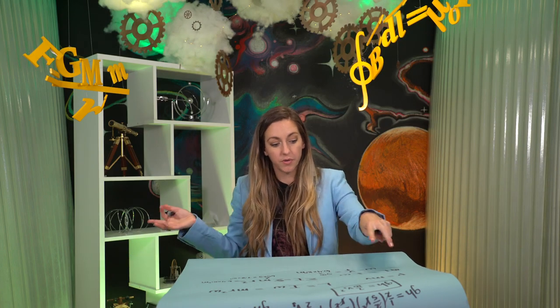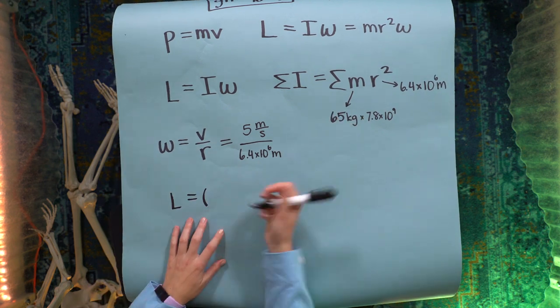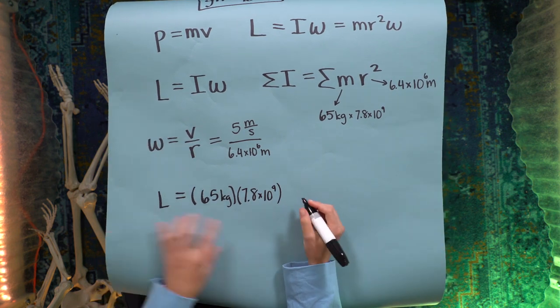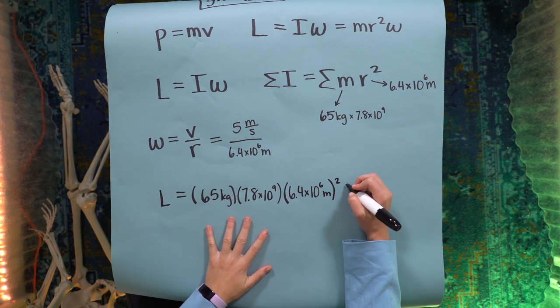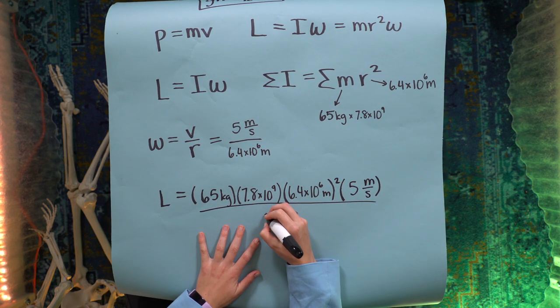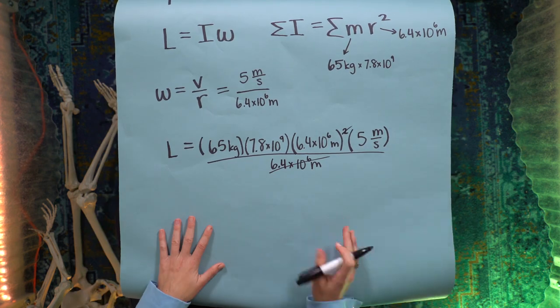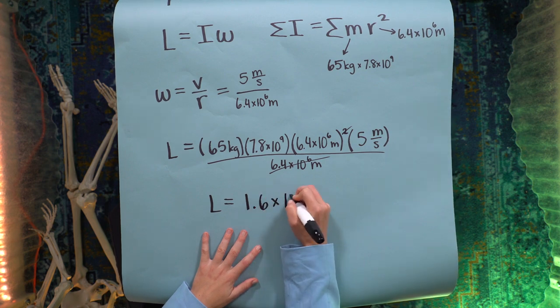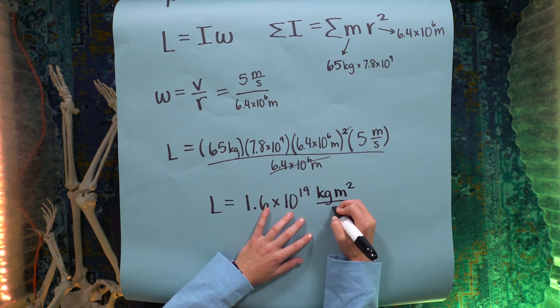Plug those numbers in those numbers into L, this equation, and solve for L. So L equals my I, here we go, 65 kilograms, times 7.8 times 10 to the 9, all of my people, all their mass, times 6.4 times 10 to the 6 meters squared. Then we're going to multiply it by this omega. So times 5 meters per second. And then divide all of that 6.4 times 10 to the 6 meters. That actually cancels with one of these. So I'm going to cancel this squared. And then if we do all this math out, I don't know, in your head, in paper, on the calculator, whatever, L, our angular momentum equals 1.6 times 10 to the 19. And then our units are kilograms times, we've got a meter squared here per second. Ta-da!